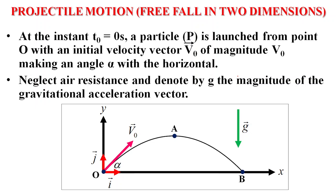At the instant t₀ equals zero seconds, a particle P is launched from the point O with an initial velocity vector v₀ of magnitude v₀ and an angle alpha with respect to the horizontal. Neglect air resistance and denote by g the magnitude of the gravitational acceleration vector, assumed constant in magnitude and direction, vertically downwards.